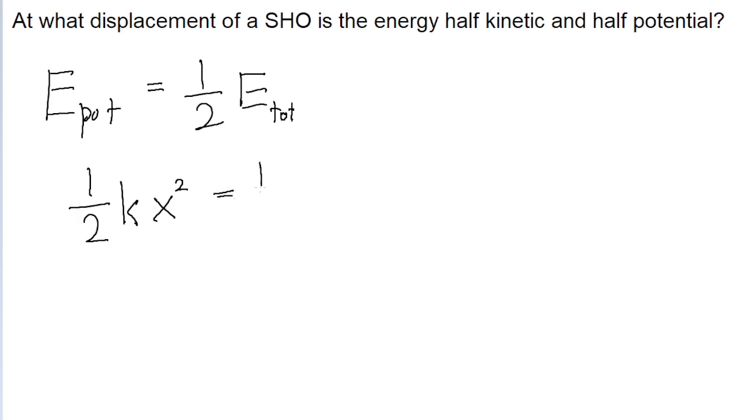And this is equal to one-half of the total energy. And recall that the total energy of a simple harmonic oscillator is equal to one-half of the spring constant multiplied by the square of the amplitude.